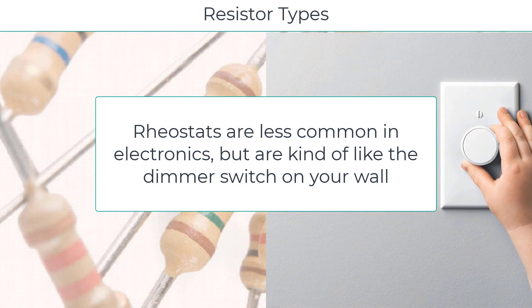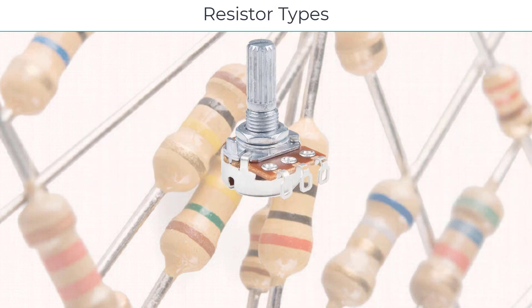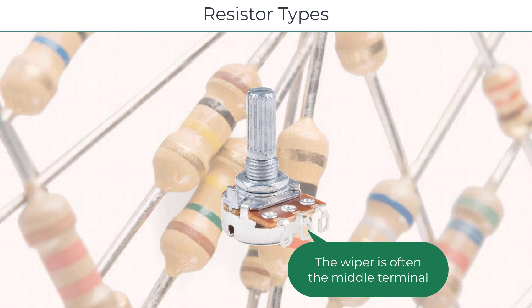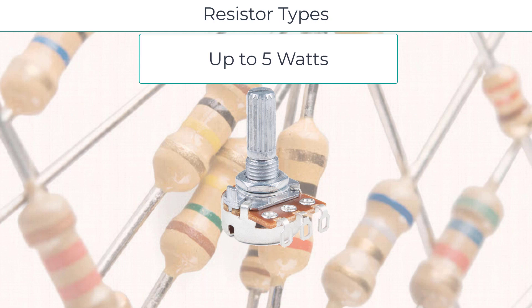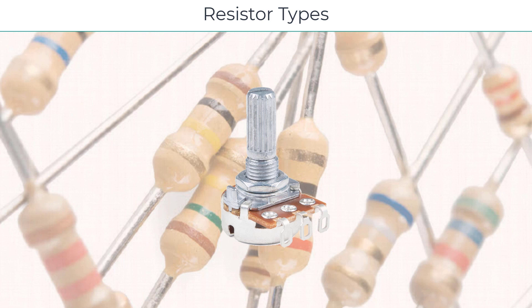One end of the internal resistance is connected to 120 volts and the wiper is connected to the lights, or vice versa. A potentiometer with one of the two end terminals shorted to the wiper terminal can be used as a rheostat. This is one reason rheostats are not very common in electronics — potentiometers are more versatile. Potentiometers are available with power ratings up to 5 watts. Since rheostats are usually meant for high power applications, they can be found with power ratings up to several tens of watts. Some higher power potentiometers are wire-wound and are therefore not suitable for audio or RF applications.